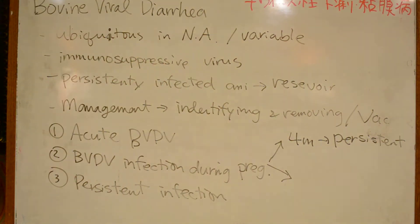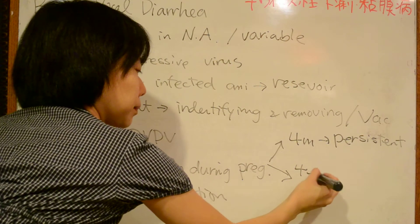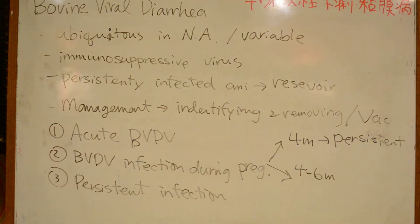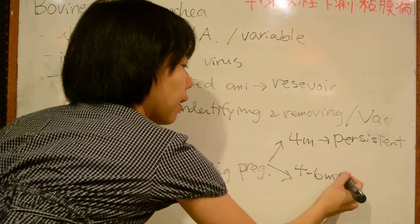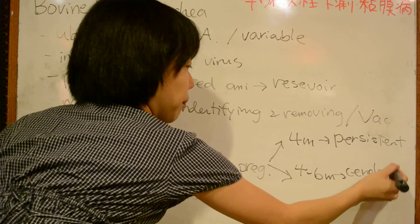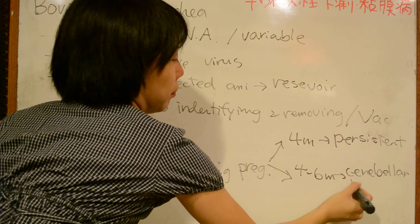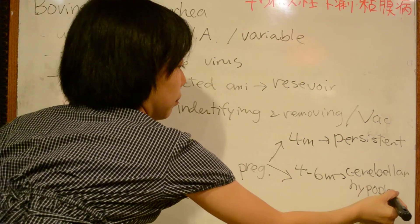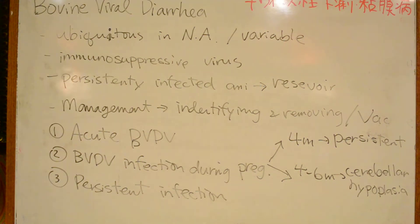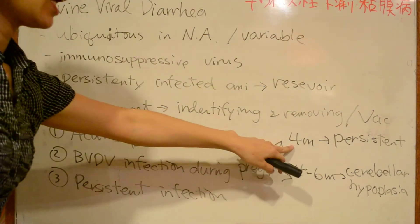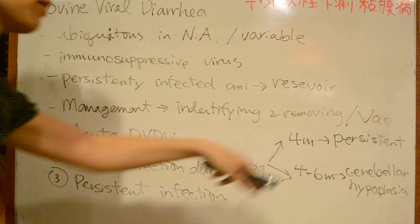Infection during four to six months of fetal development can result in congenital malformations of the eye and central nervous system, which can include cerebellar hypoplasia. You should remember these month ranges and their corresponding sequelae as paired associations.